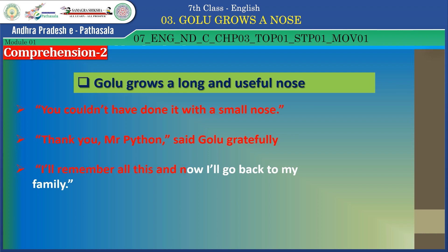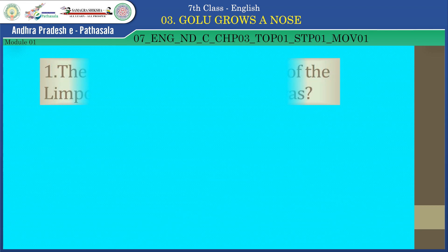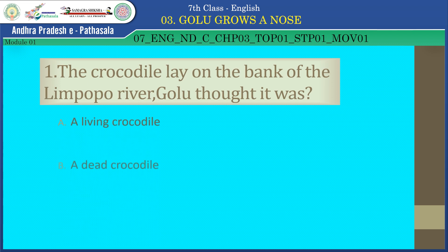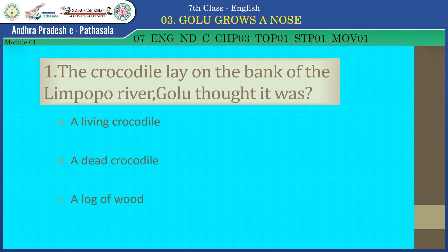Children, let's check Comprehension 2. The crocodile lay on the bank of the Limpopo River. Golu thought it was — A. A living crocodile, B. A dead crocodile, C. A log of wood. Yes, you are correct — it is a log of wood. Well done.